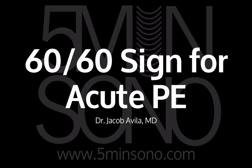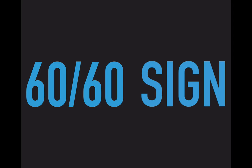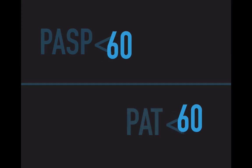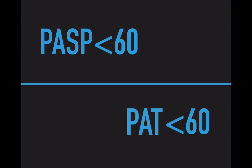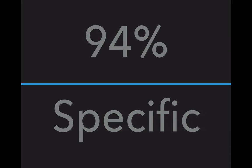Hi, this is Ben Smith from 5-Minute Sono and today I'm going to talk about the 60-60 sign for pulmonary embolism. The 60-60 sign consists of two different parts. The first part is that the pulmonary artery systolic pressure has to be measured at less than 60 millimeters of mercury. The second part is that the pulmonary acceleration time has to be measured at less than 60 milliseconds. If you have both of these two things together, you're actually 94% specific for pulmonary embolism.